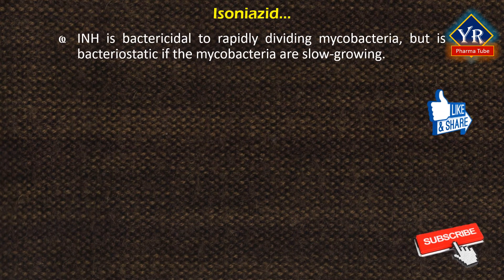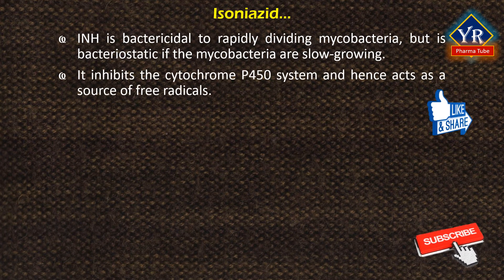Isoniazid is bactericidal to rapidly dividing mycobacteria, but is bacteriostatic if the mycobacteria are slow growing. It inhibits the cytochrome P450 system and hence acts as a source of free radicals. Isoniazid is also a mild monoamine oxidase inhibitor.